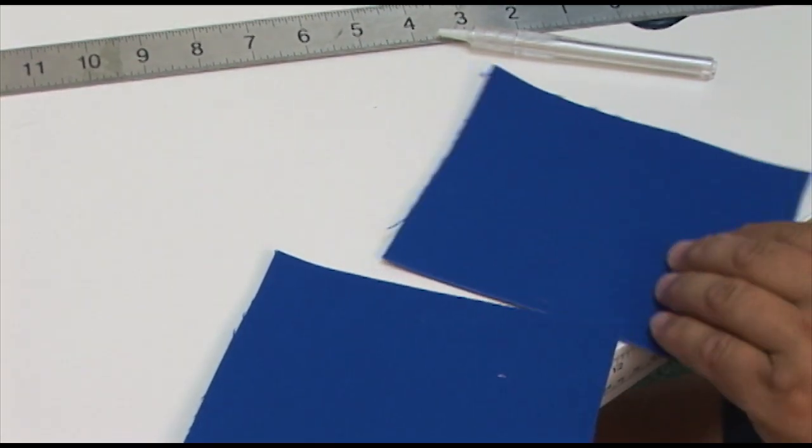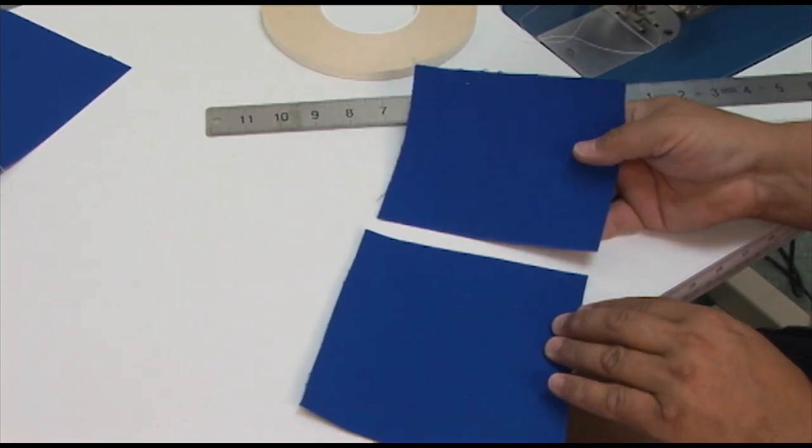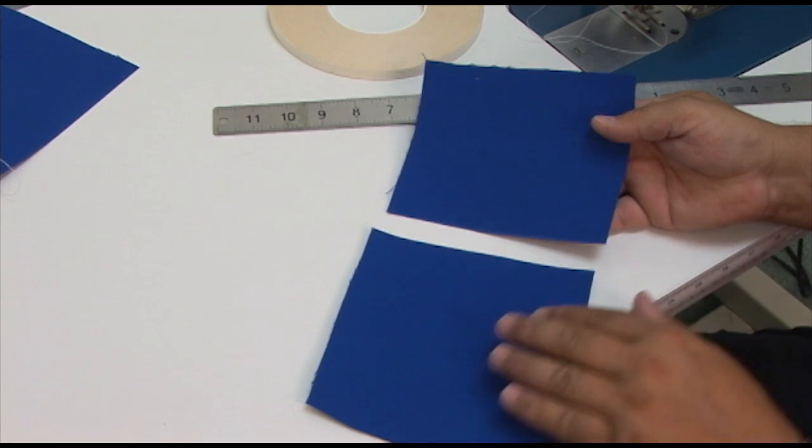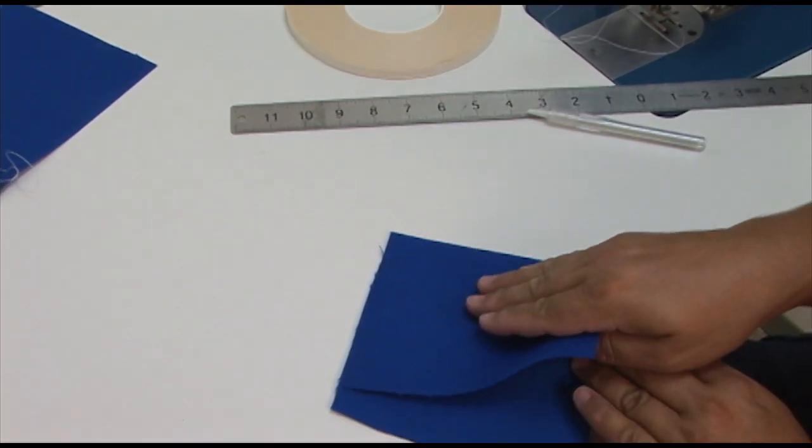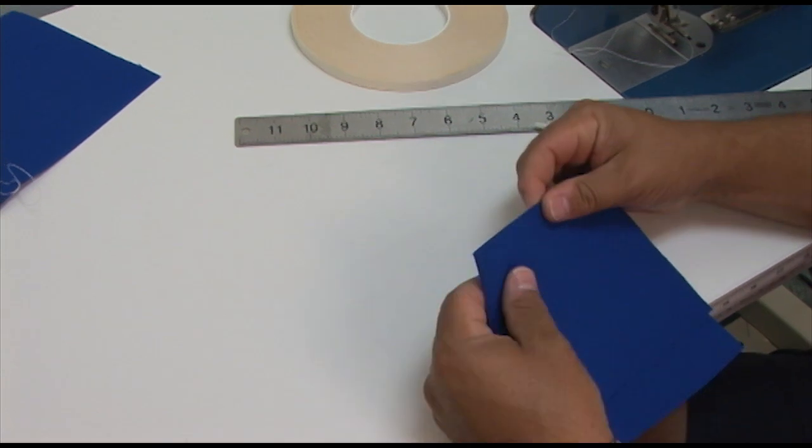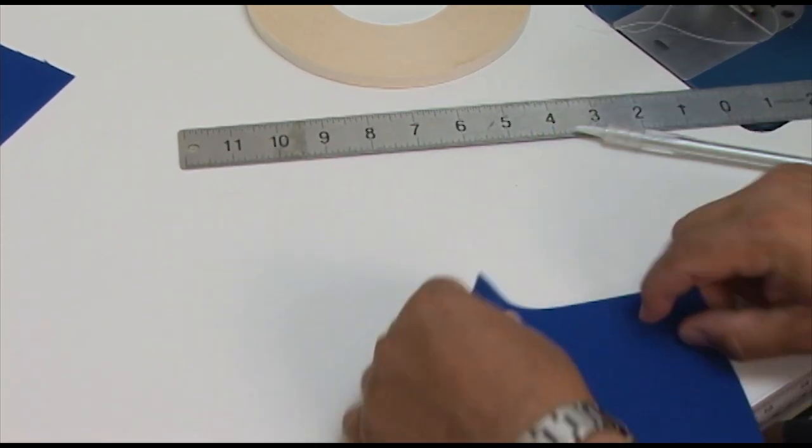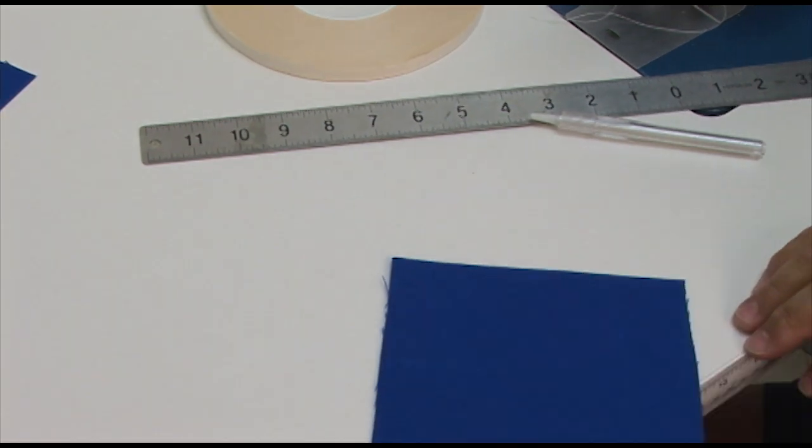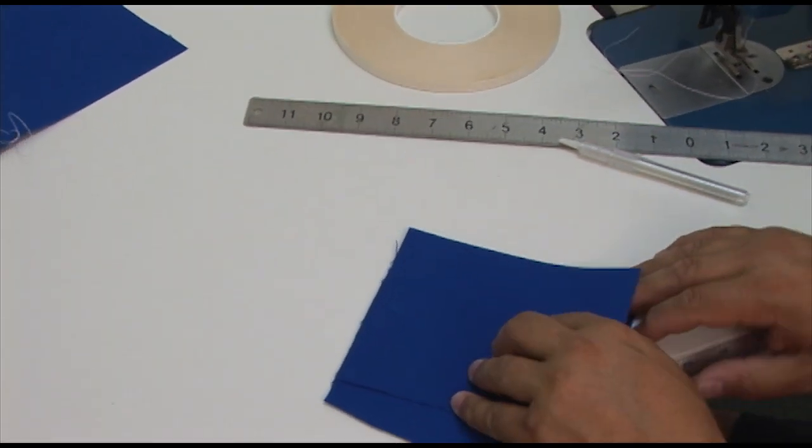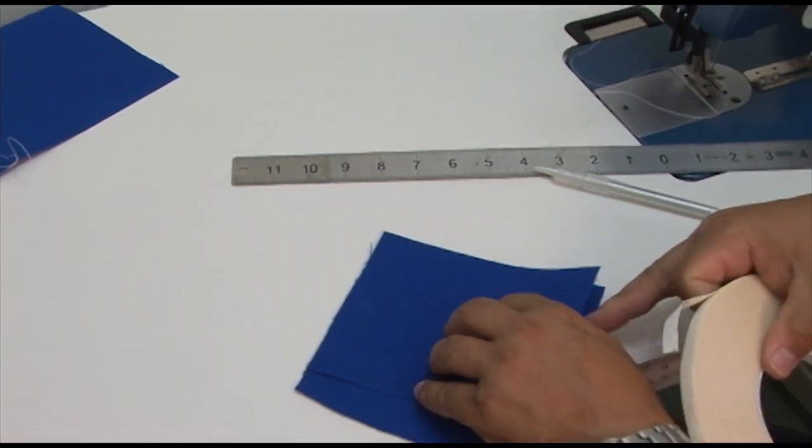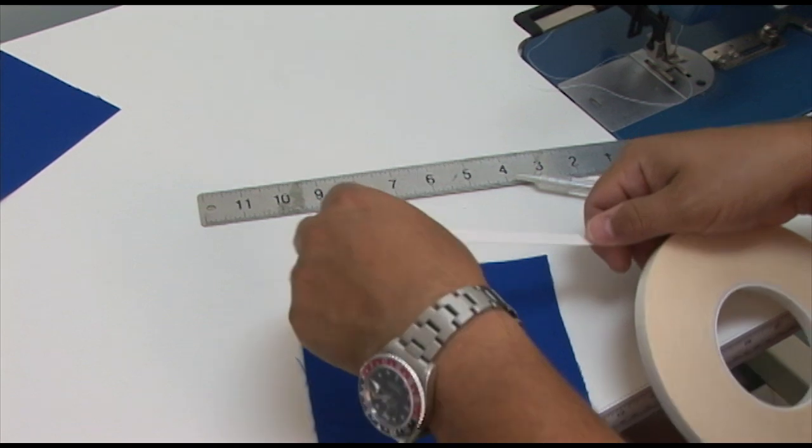Now what you would do is you would take your materials. If you had a material that wasn't the same on both sides, which Sunbrella is, but it had a face, you would want to put the material so that it is face to face, and then line up the raw edge that you're going to be sewing. This is a case where it's often not necessary to use basting tape, but it's helpful nonetheless. So I am going to use the basting tape because we like to train our customers to always use basting tape.